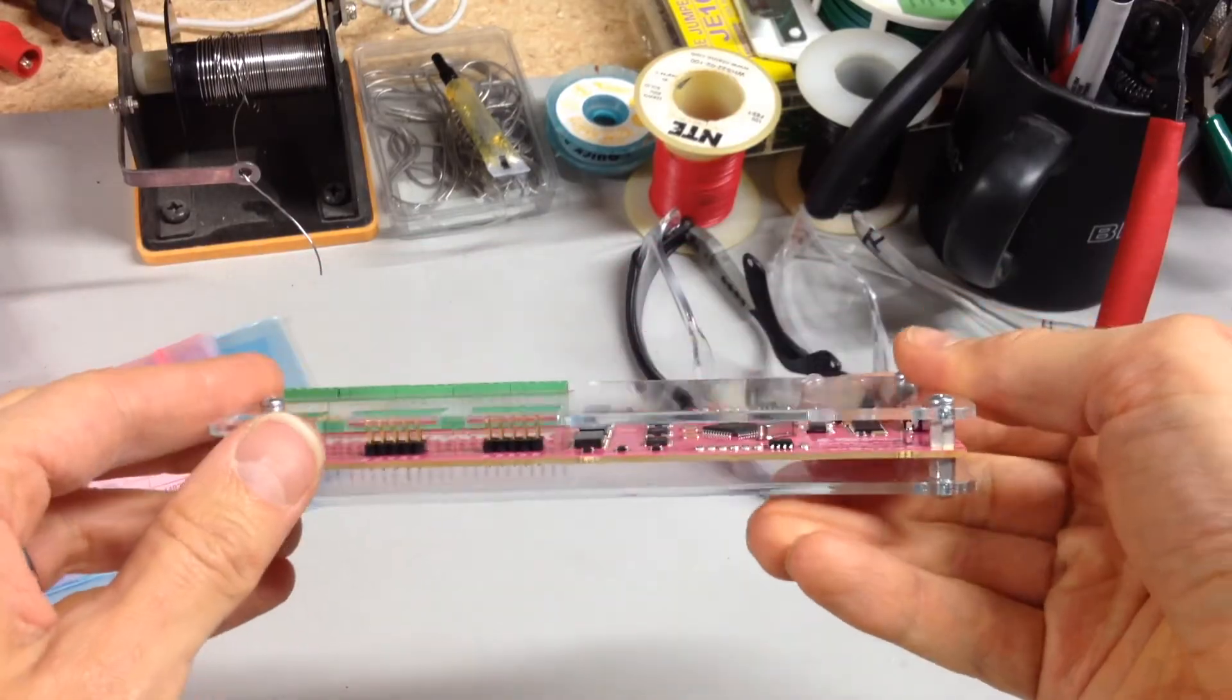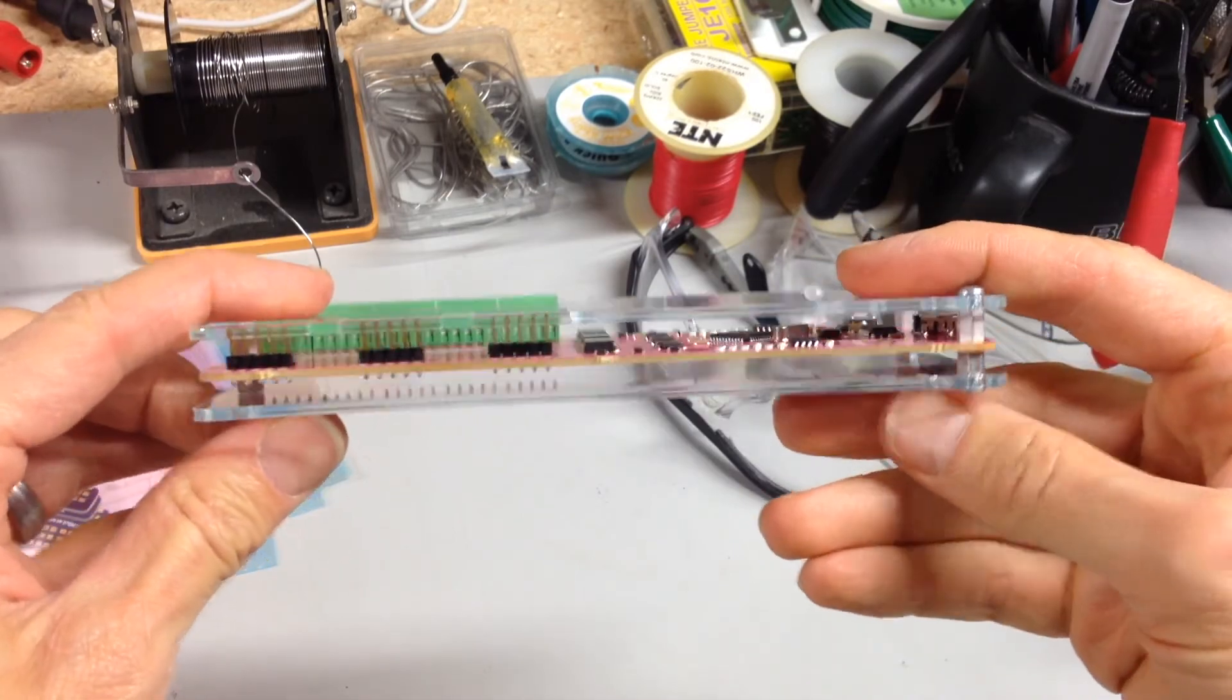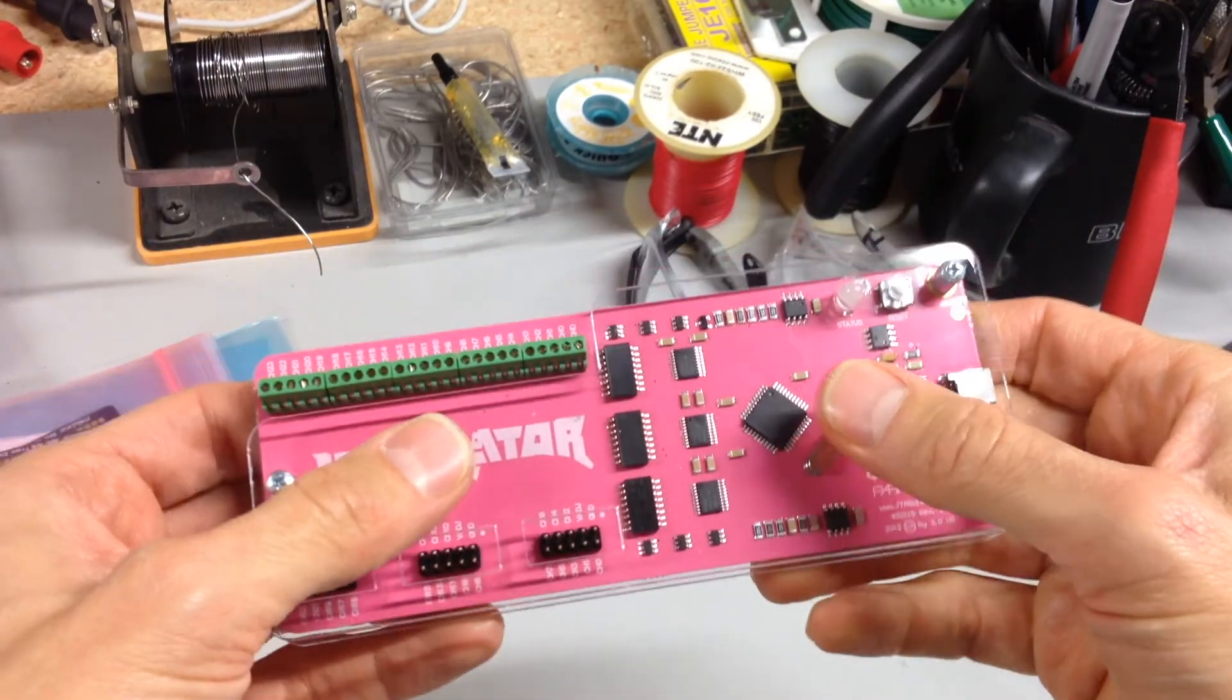Here is the finished product. Straightforward, simple, and now you're protected. JTagulator Acrylic Case Assembly, successful.